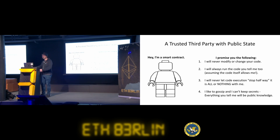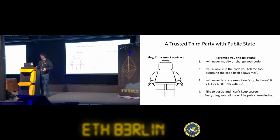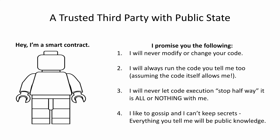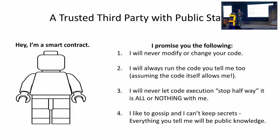A smart contract is really solving a coordination problem — helping everyone coordinate around a single piece of code. It gives you these promises: first, it should never modify your code. Once you deploy the smart contract it becomes autonomous and the code never gets changed. Every time you execute a function it should always run exactly the code you defined. Importantly for security: code execution never stops halfway through.